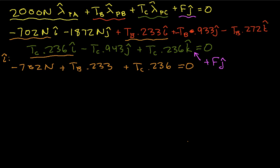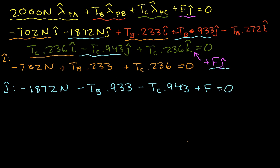The j-hat equation - we have a j-hat term here, so we have minus 1872 newtons. We have a j-hat here, so we have minus TB times 0.933. We have a j-hat here, and we have this guy here, plus F. That's equal to 0.